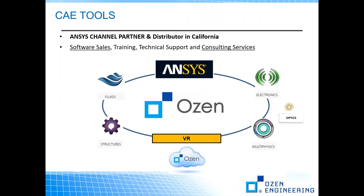We're an ANSYS channel partner in Northern California. That means we sell ANSYS software, we train customers on using the software, we provide technical support, and we also provide engineering consulting services. If you ever have any projects you'd like assistance with, we can do those for you, get you the project files, and teach you how to use them, or just do it all ourselves. We sell ANSYS software products that includes fluids, structures, electronics, and general multi-physics capabilities, including optics.